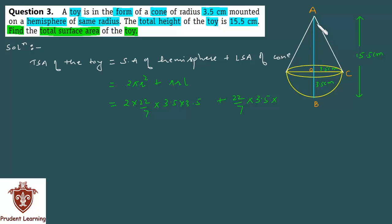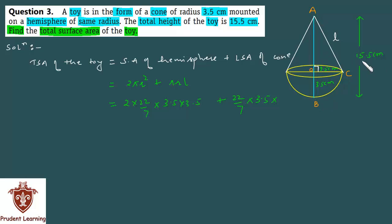The cone is a right circular cone, so triangle AOC is a right-angled triangle with angle AOC = 90°. OC is 3.5 cm. To find AO, we use: AO = AB − OB, where AB is the total height of the toy (15.5 cm) and OB is the hemisphere's radius (3.5 cm).